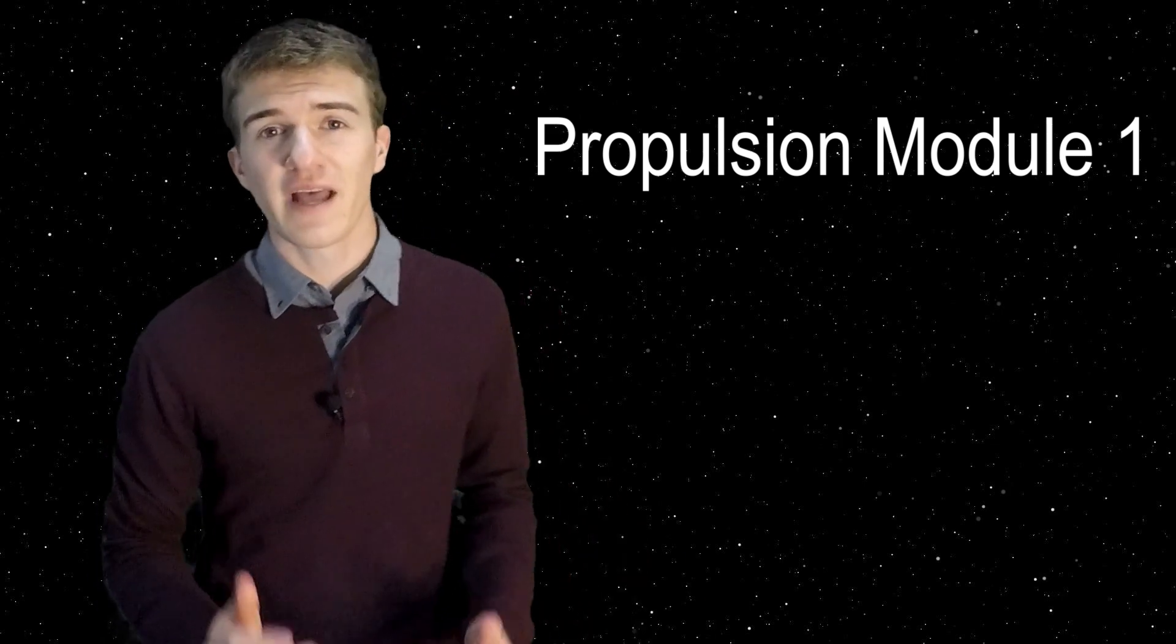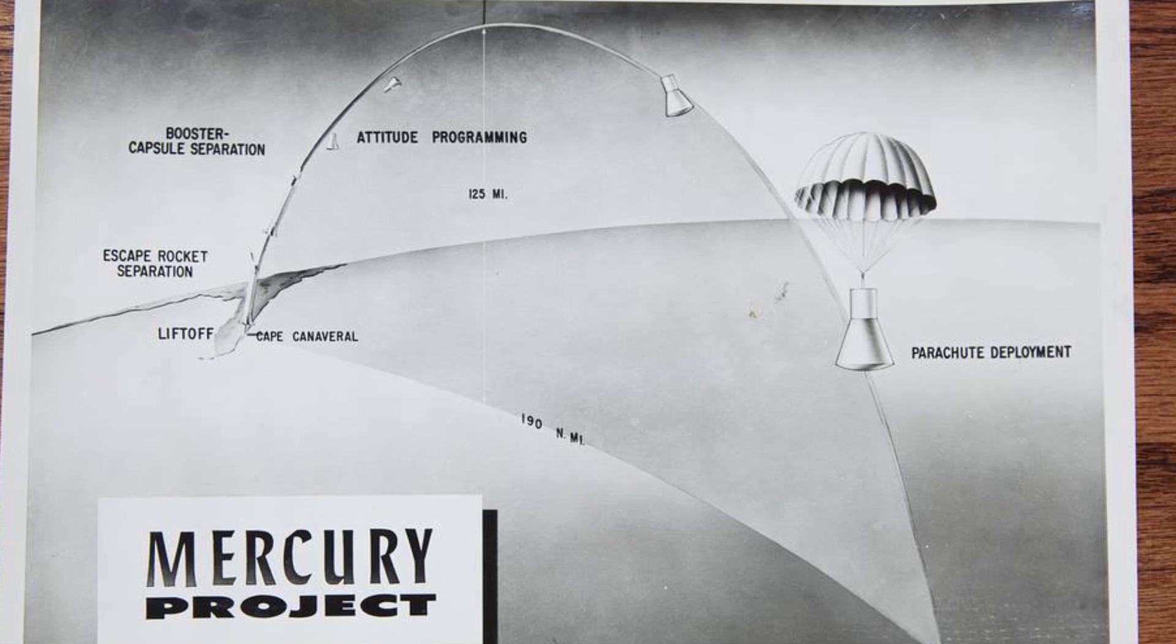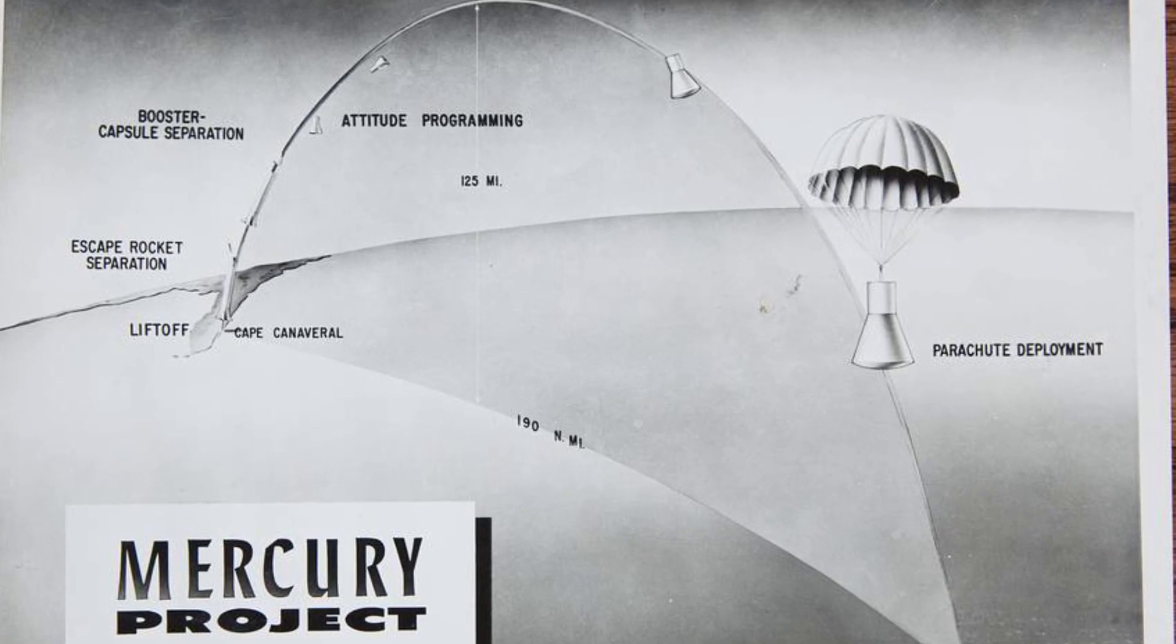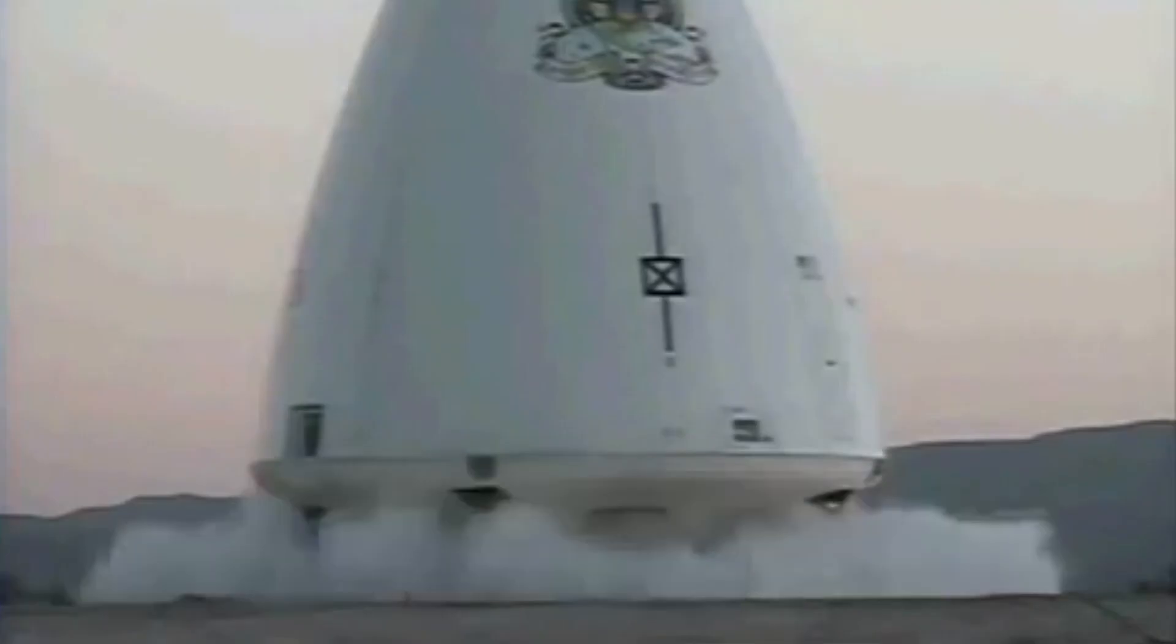New Shepard is named after Alan Shepard Jr., who was the very first American astronaut to get to space. Alan Shepard didn't make it into orbit initially, he just went into a suborbital flight, which has to reflect the name New Shepard. At the same time when they were doing these tests with Goddard, Blue Origin announced what exactly their plan was with the test vehicle.